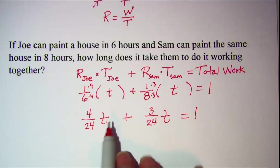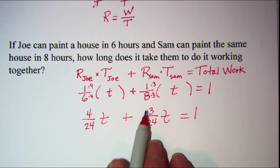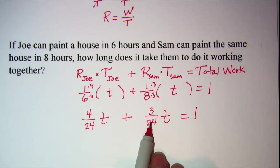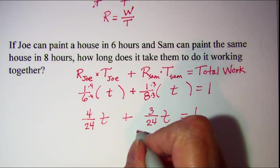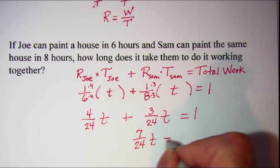Now if we add these like terms, we have four twenty-fourths t plus three twenty-fourths t. That'll be seven twenty-fourths t equals one.